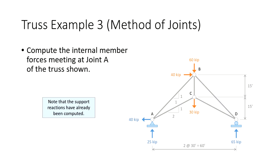I have a truss system here, and we're going to compute the internal member forces at joint A using the method of joints. I just picked joint A — we could start at joint D. The method of joints requires starting at a joint with at most two unknowns. We couldn't start at joint C or B because both have three members meeting there. Regardless of whether you start at joint A or D, both unknowns are diagonals, which creates an added layer of complexity.